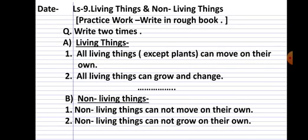You also have one more homework in your RAB book. Write the characteristic features two times for practice. A — Living things: number one, all living things except plants can move on their own; number two, all living things can grow and change. B — Non-living things: number one, non-living things cannot move on their own; number two, non-living things cannot grow and change on their own. Write all these features two times in your RAB book.